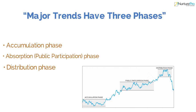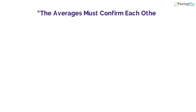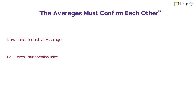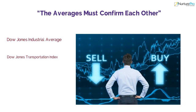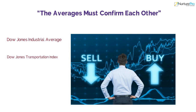The fourth tenet of Dow Theory says that the averages must confirm each other. As per this tenet, any rise or fall in the Dow Jones Industrial Average must be accompanied by a rise or fall in the Dow Jones Transportation Index. If there is any divergence in both of these averages, it means that the market is going to change direction.